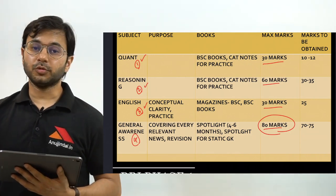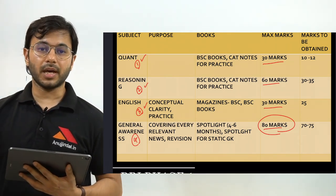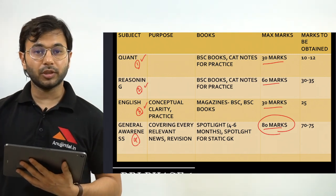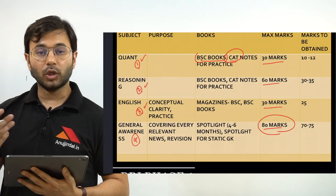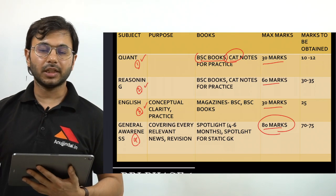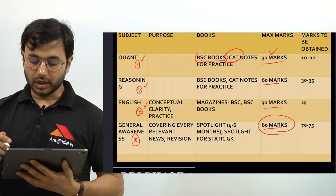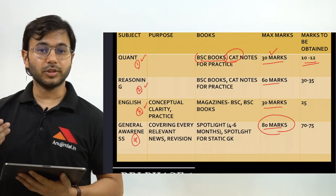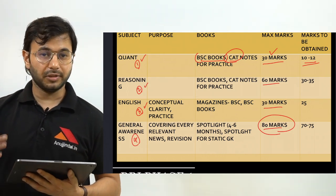On my YouTube channel you will find separate playlists for Quant, Reasoning and English, through which you can easily prepare topic-wise for all three sections. Once you're done with the concepts, move towards practicing using BSC Banking Services Chronicle books and magazines, as well as CAT notes of various institutes — whether it's Sathagat, CL or any other. Out of 30 marks for Quant, if you're able to score 10 to 12 marks — which is comfortable given the section is normally difficult — you can crack Phase 1.